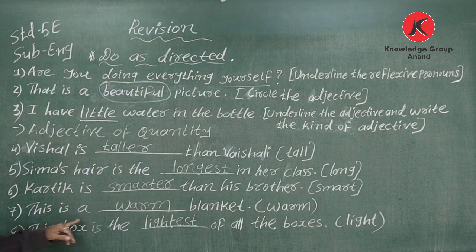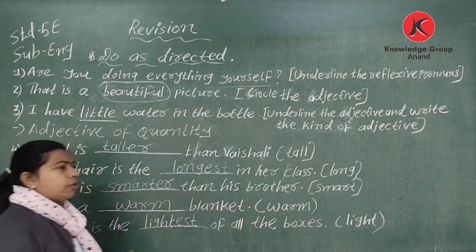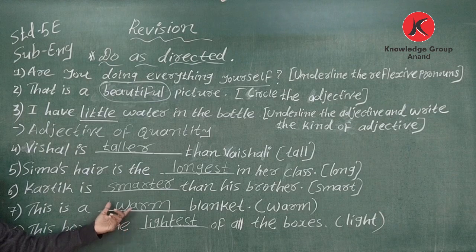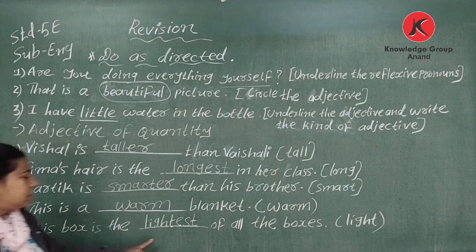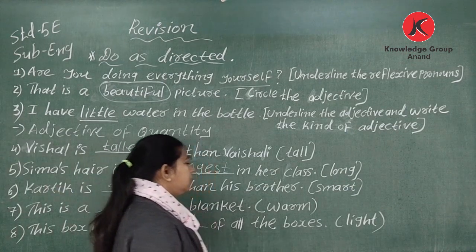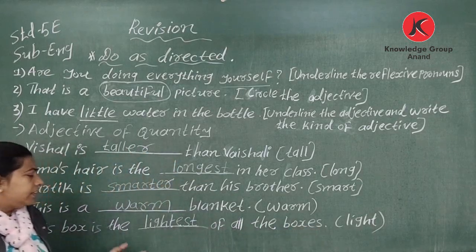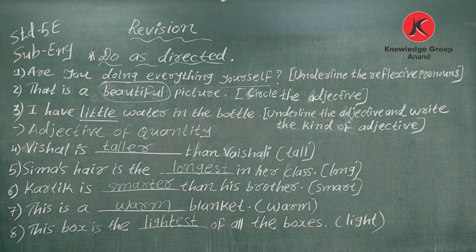Number seven: 'This is a warm blanket' — positive degree sentence, no word needed in brackets. Number eight: 'This box is the lightest of all the boxes' — we have written the superlative form. So now let's continue writing.